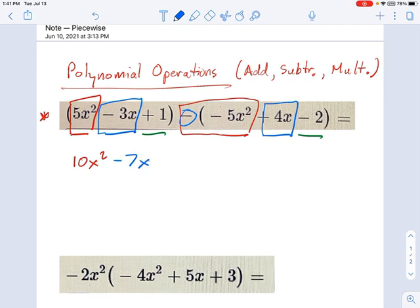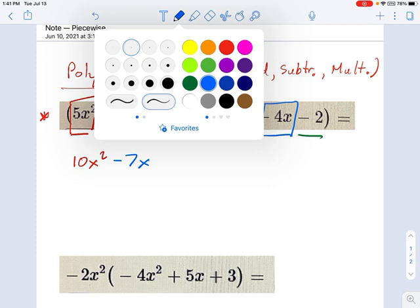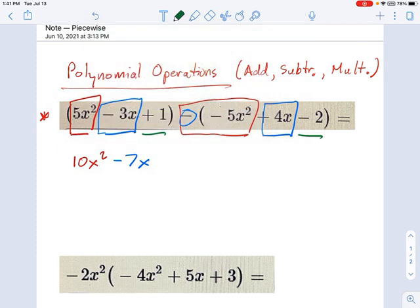So that becomes minus 7x. And it's a 1 minus a negative 2 by the same logic. So that's 1 plus 2. That becomes 3. So we get 3. And that would be your final answer.